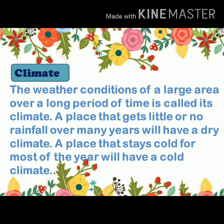Our next topic is climate. The weather conditions of a large area over a long period of time is called its climate. A place that gets little or no rainfall over many years will have a dry climate. A place that stays cold for most of the year will have a cold climate. The climate of a place depends on the weather conditions of that place over a long period of time.